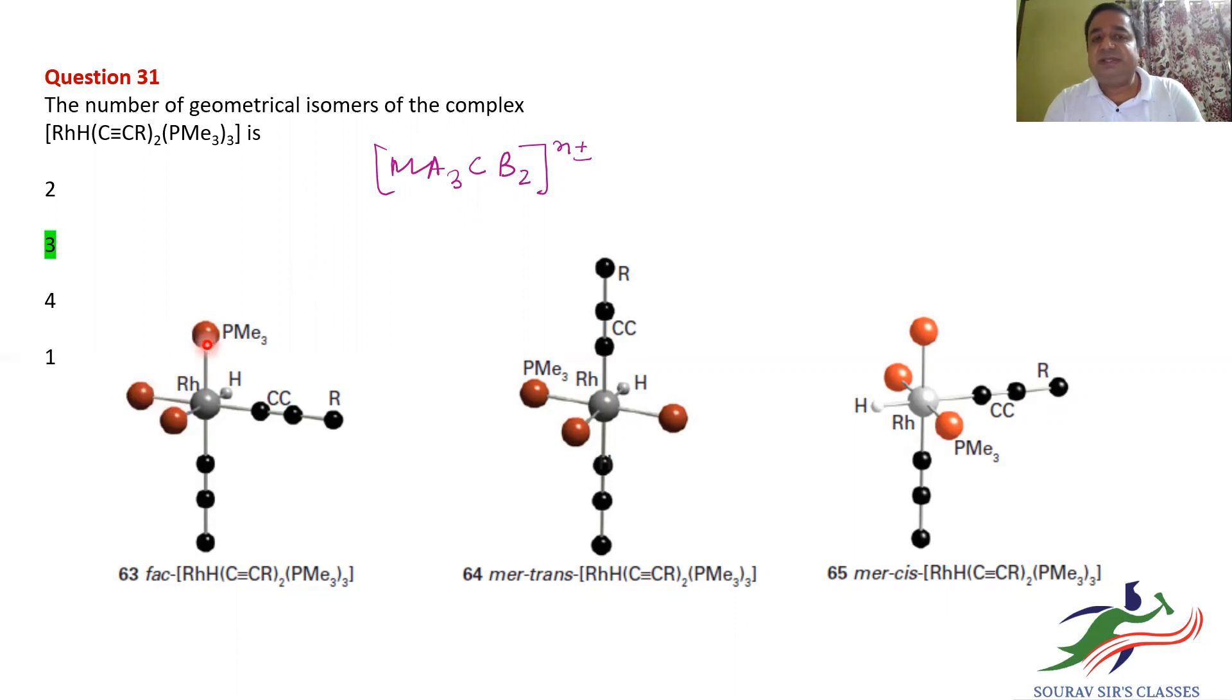Now if you want to make the meridional, simply take one of the PMe₃ and put it trans to another one. So this red sphere trans to another red sphere will give you a meridional. Now here we have two PMe₃ opposite to each other. So these are meridional and we have the alkyne type of ligands trans to each other.